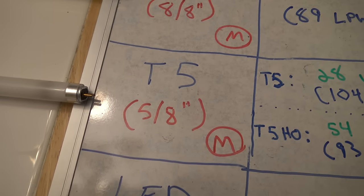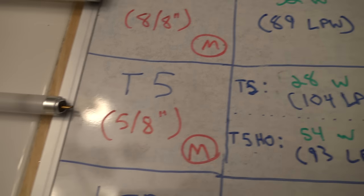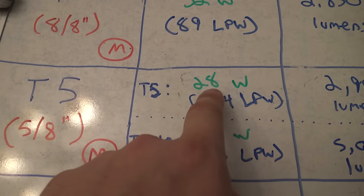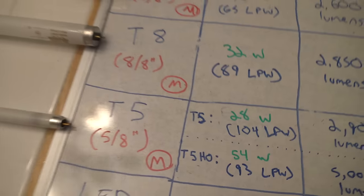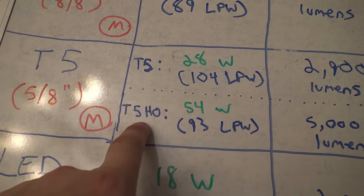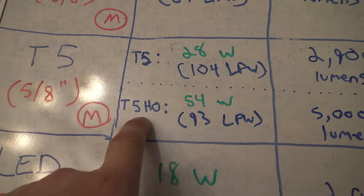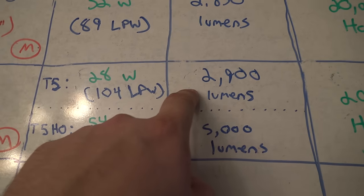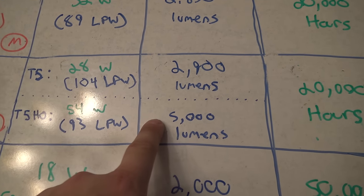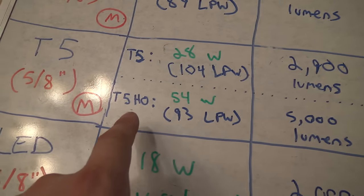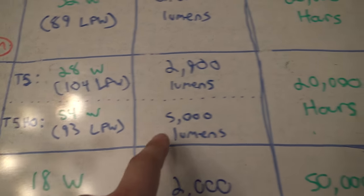Moving on down to the T5s. These are a little bit newer and they come in two varieties. You've got the regular T5s at around 28 watts, and this is all based on a 4-foot light by the way, 28 watts versus T5 high output which is specifically designed for growing plants at 54 watts. You've got 2,900 lumens and 5,000 lumens, respectively. Obviously, if you're using high output lights, you could probably use less of them because of this.